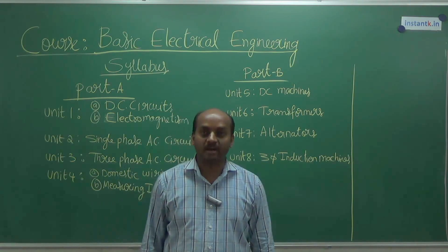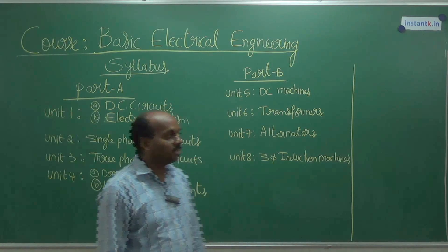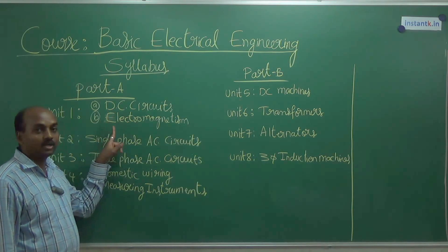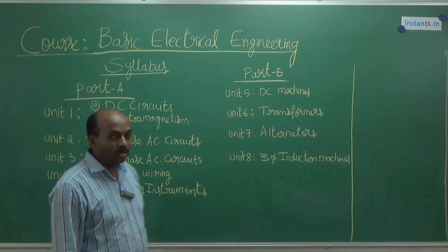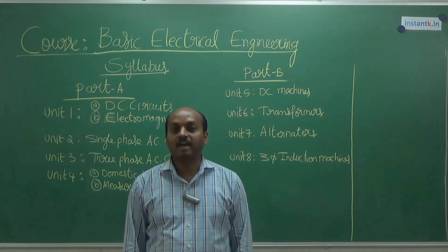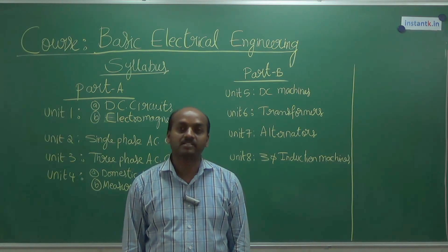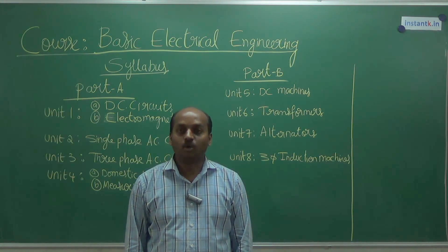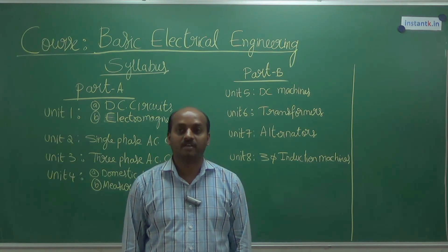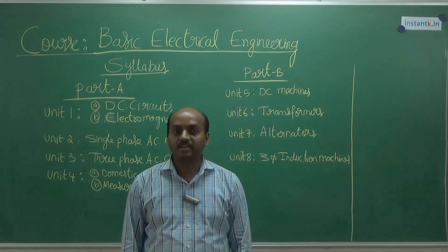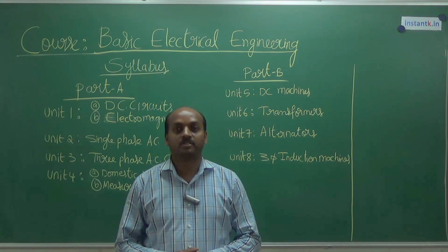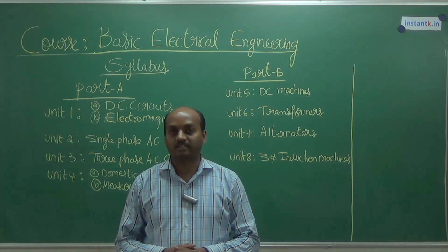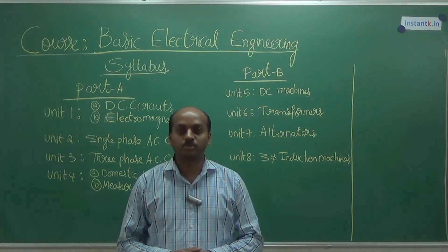Today, let us see the syllabus. Syllabus consists of Part A: DC circuit and Electromagnetism. If you talk about the DC circuit, the basic concept is we have a source and the load. Any electrical circuit will have a source and the load. If your source is DC supply, we normally prefer resistance for the DC circuits. We are going to deal with DC supply and the basic passive element, resistance. Resistance is basically a property of a conductor which opposes the flow of current.